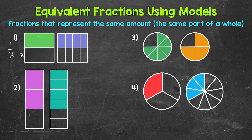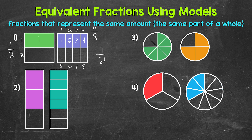The other square was divided into one, two, three, four, five, six, seven, eight equal parts. So eight is our denominator. And then one, two, three, four parts are shaded in. So four is our numerator. Four eighths of that square is shaded in. So the square on the right is representing four eighths. We can see that the same amount of each square has been shaded in, the same part of the whole square. So one half and four eighths are equivalent fractions.